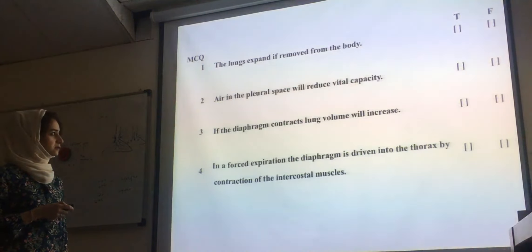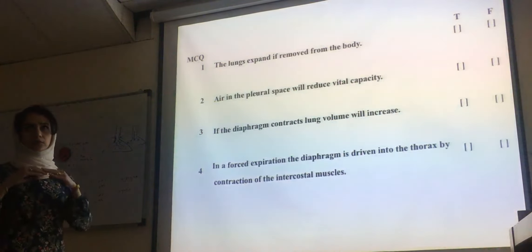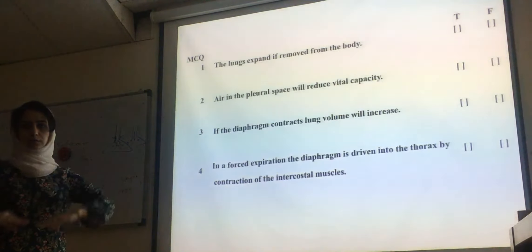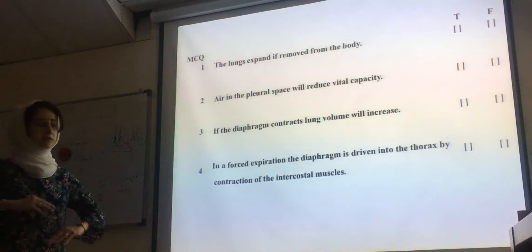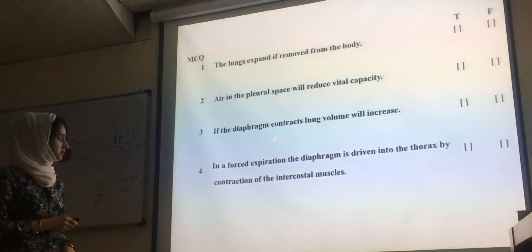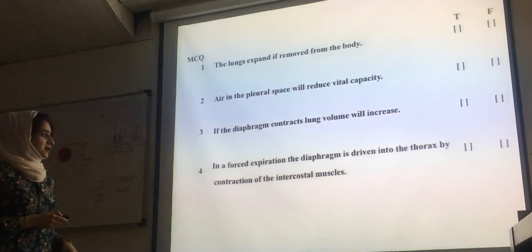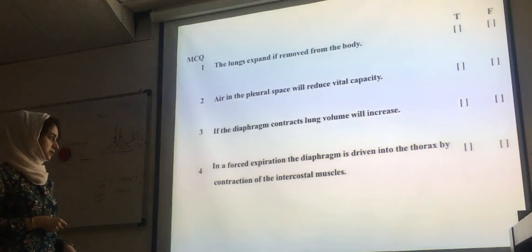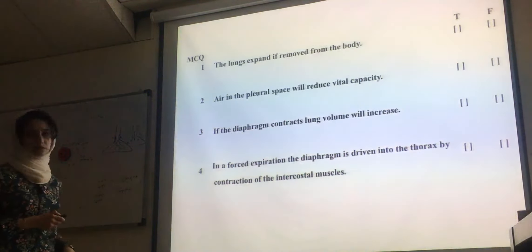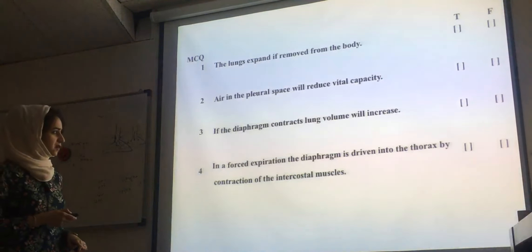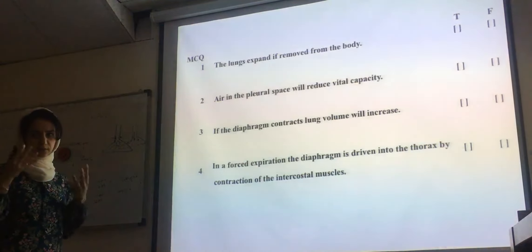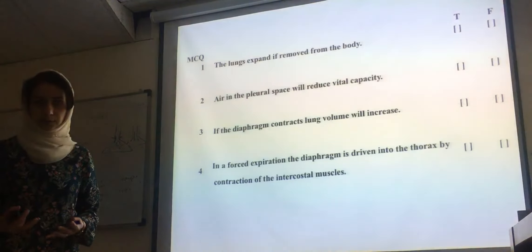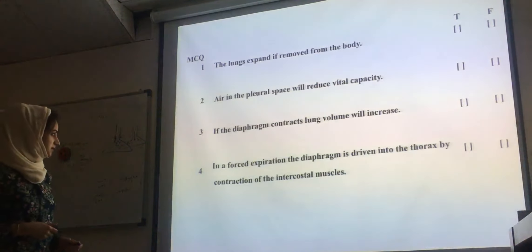Third: if the diaphragm contracts, lung volume will increase. This is true — when the diaphragm contracts it moves downward, increasing lung volume. Fourth: in forced expiration, the diaphragm is driven into the thorax by contraction of the intercostal muscles. This is false. The diaphragm is driven into the thorax by the abdominal muscles — the external obliques, abdominal muscles, and rectus abdominis — forcing abdominal content upward.